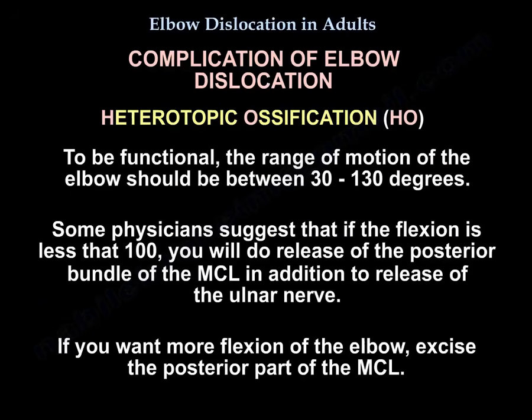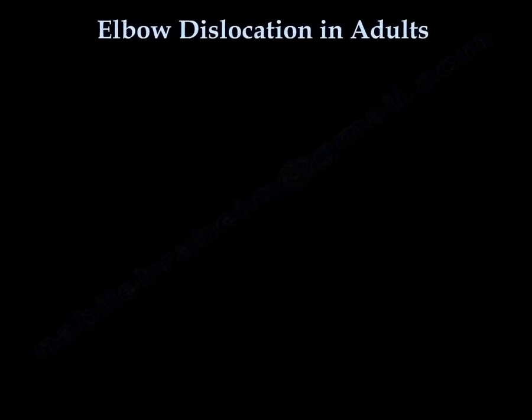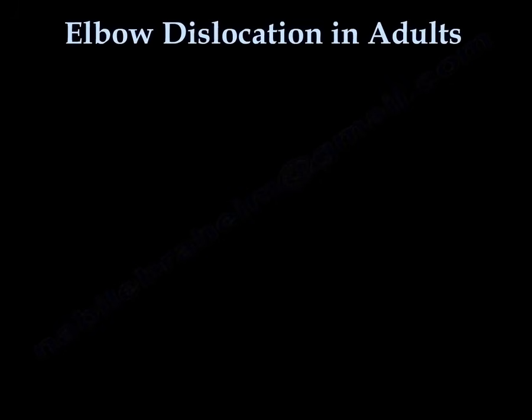To be functional, the range of motion of the elbow should be from 30 to 130 degrees. Some suggest that if flexion is less than 100 degrees, release the posterior bundle of the MCL in addition to releasing the ulnar nerve. If you want more flexion, excise the posterior part of the MCL. Thank you very much — I hope that was helpful.